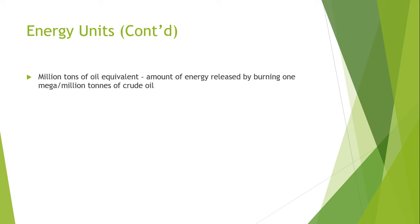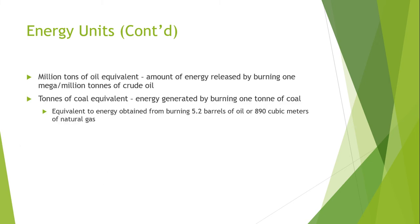The next unit is the million tons of oil equivalent, which is the amount of energy released when we burn one million or one megaton of crude oil. Coal equivalent is the amount of energy associated with burning one ton of coal. This energy is also equivalent to the energy obtained from burning 5.2 barrels of oil or 890 cubic meters of natural gas.